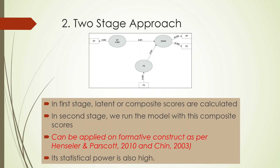For the two-stage approach, the latent or composite scores of the constructs are calculated first. For example, if we have four statements for a construct, one composite score will be calculated for each construct, and then the effects are calculated. According to Henseler (2010) and Hair (2003), this can also be applied to formative constructs, and its statistical power is really high.